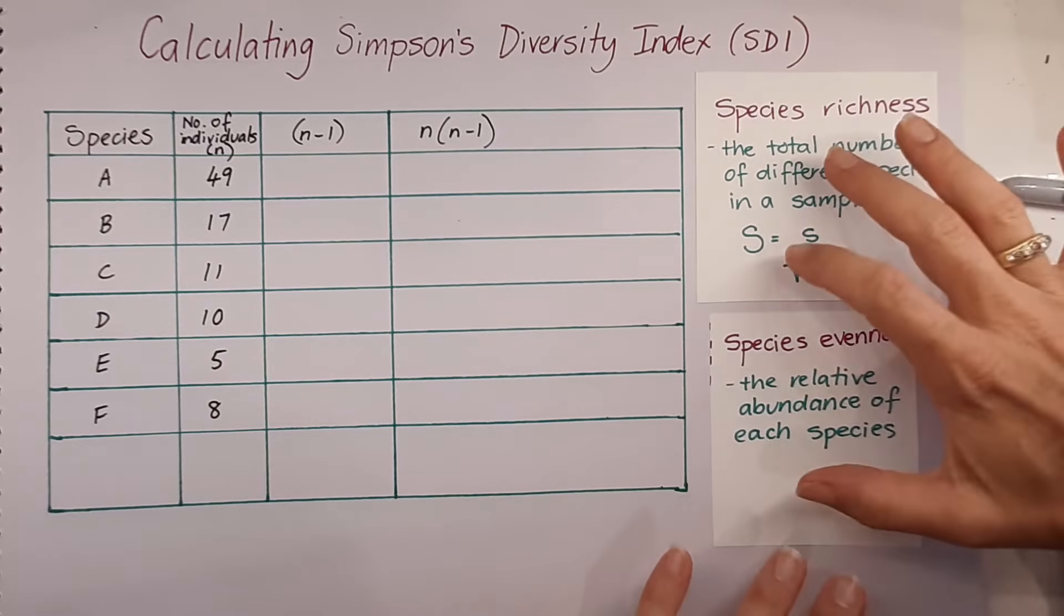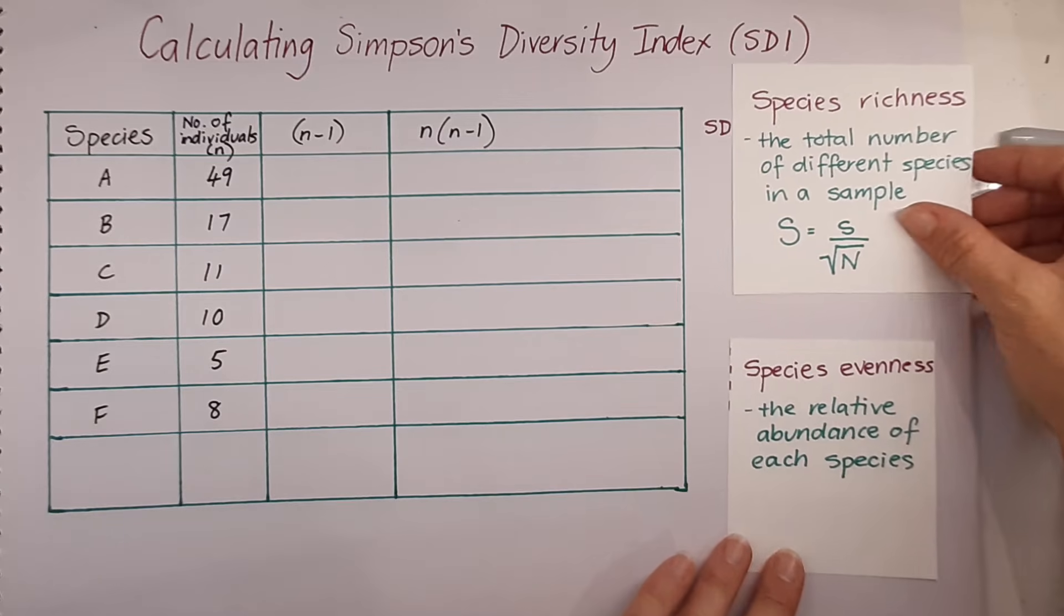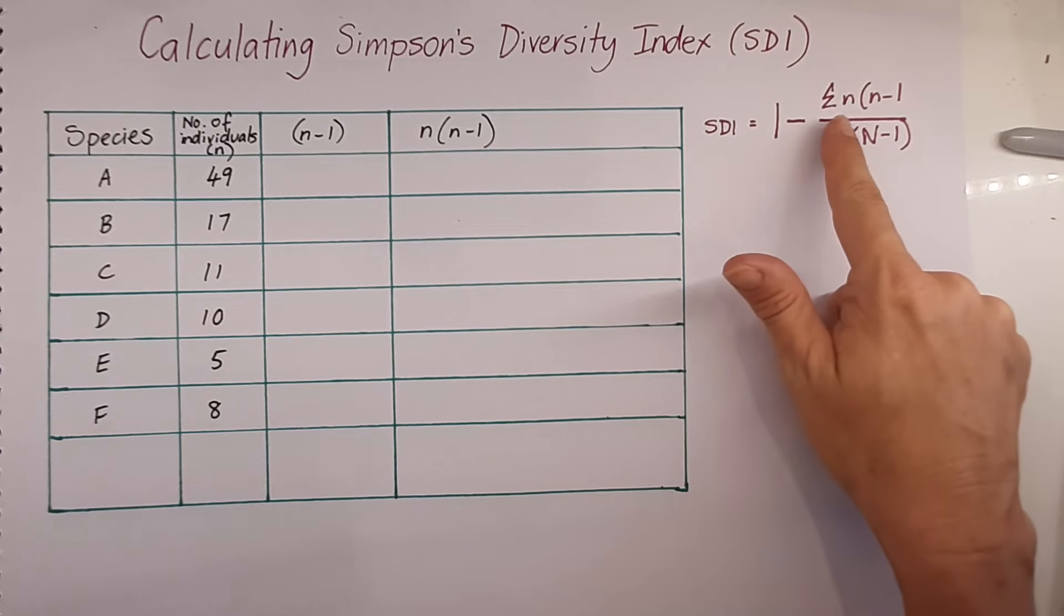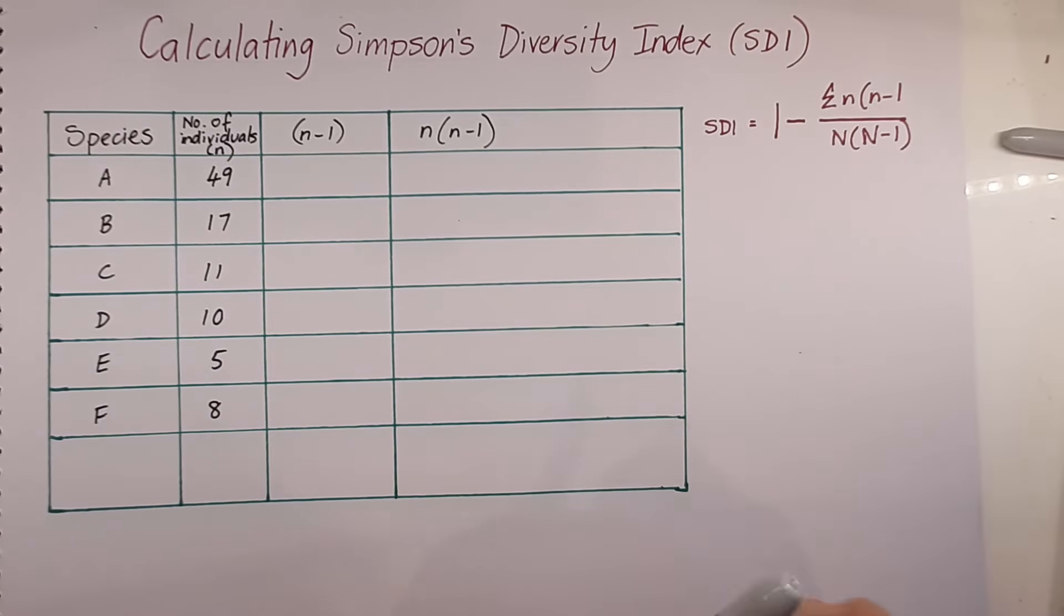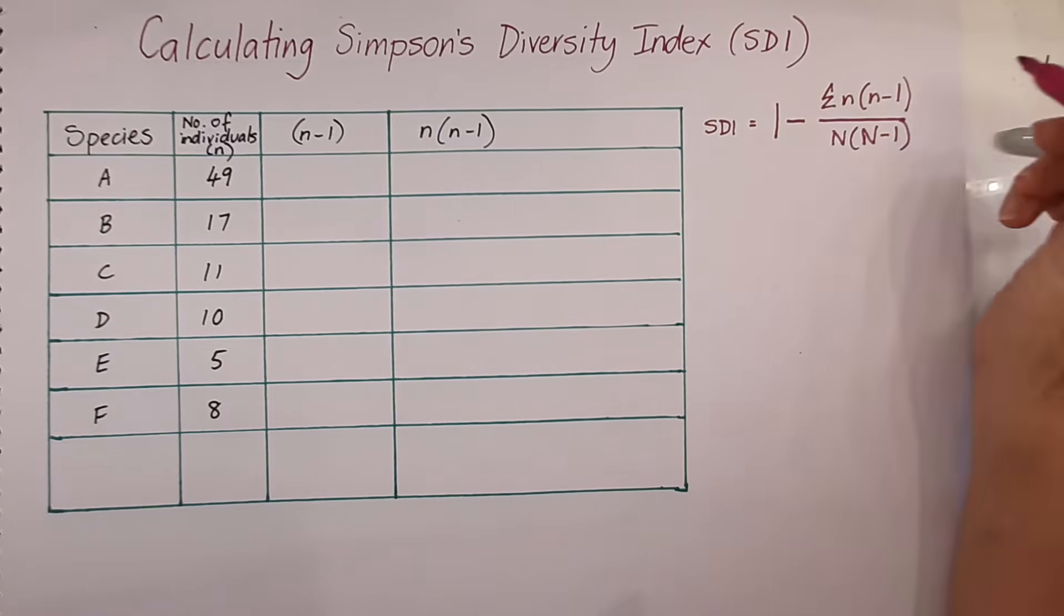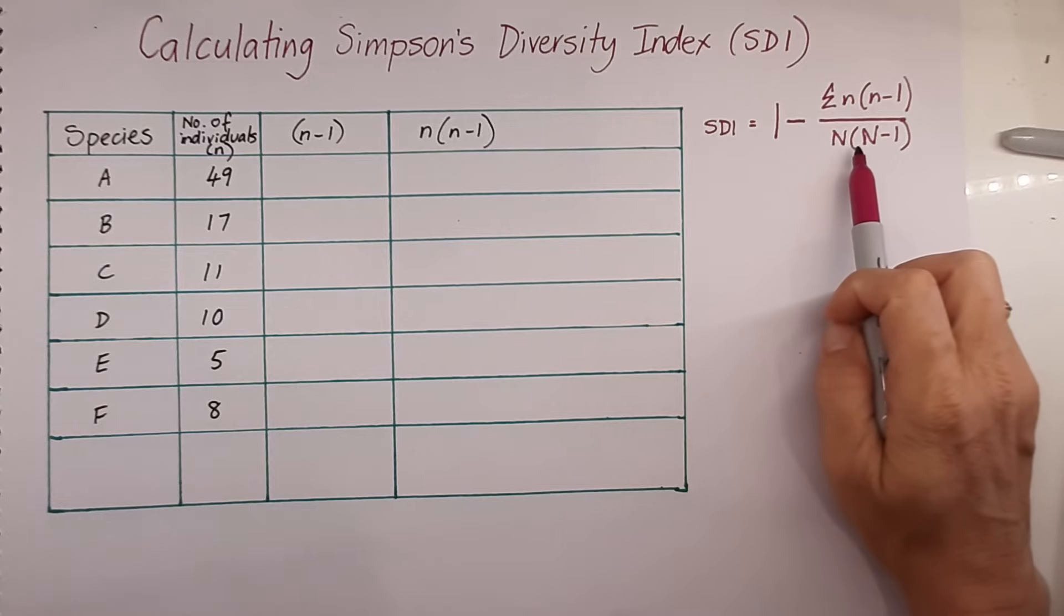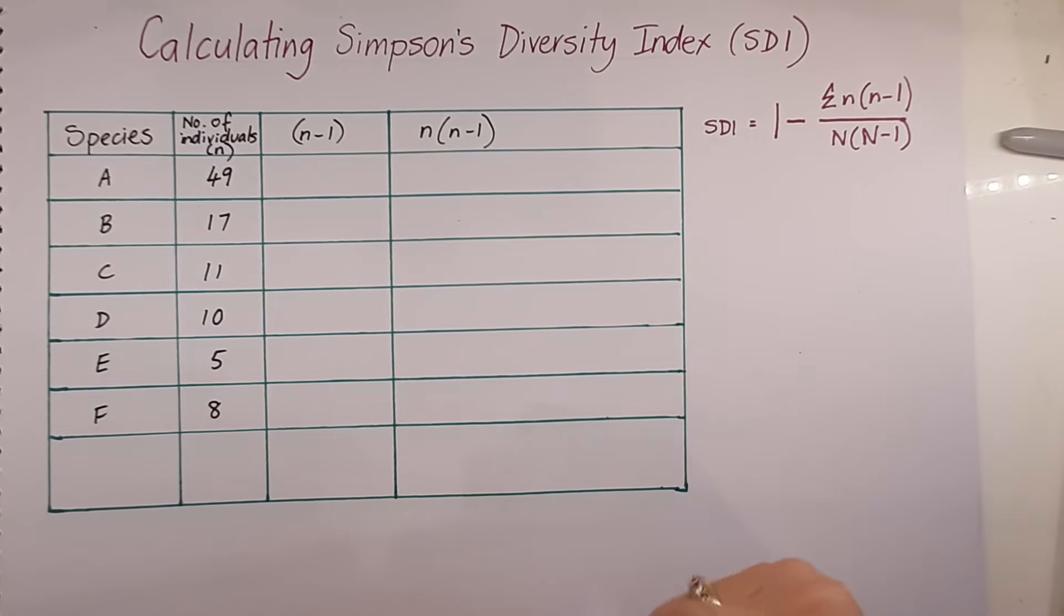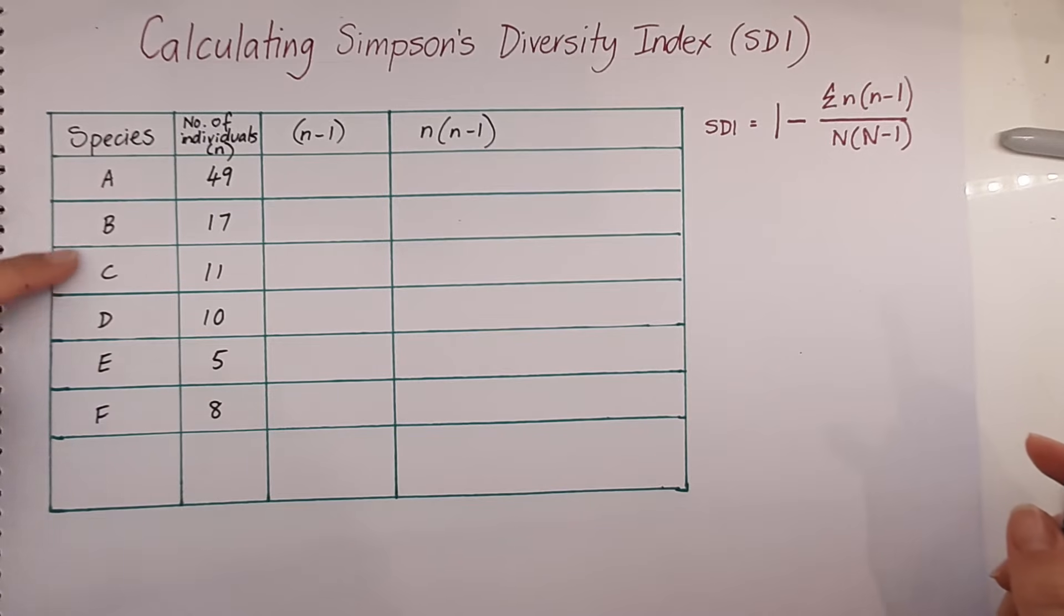So SDI takes into account both these factors. And it does this by using the formula 1 take away the sum of little n multiplied by n take 1 divided by big N times N take 1. So I'm going to take you through how to do that. So let's say this is our community. And within our community, we found six different species. So in this case, our species richness would be 6.